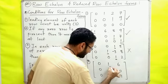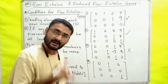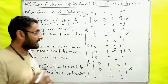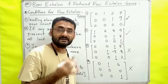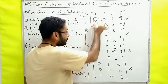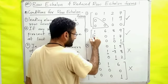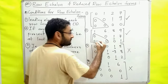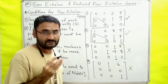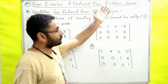Let's look at another example. If the leading element is 1, here the leading element is 1. The second condition is that if there is a zero row, it should be at the bottom. Here there is a zero row, but it is not at the bottom — this means this is not the row echelon form. Now, the row echelon form we also call the upper triangular matrix. In the echelon form, the lower triangle becomes zero, so we call it an upper triangular matrix.